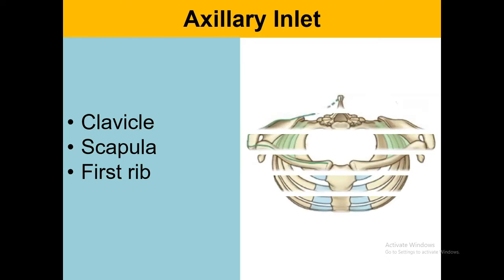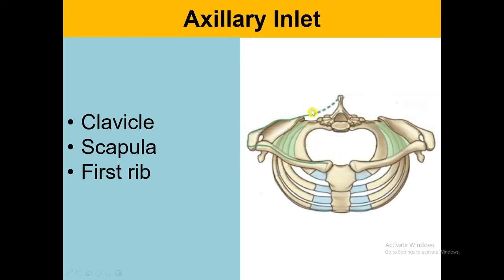The axilla inlet is the axilla apex, which is the opening of this pyramidal space. Anteriorly we have the clavicle, posteriorly the scapula, and medially the first rib.